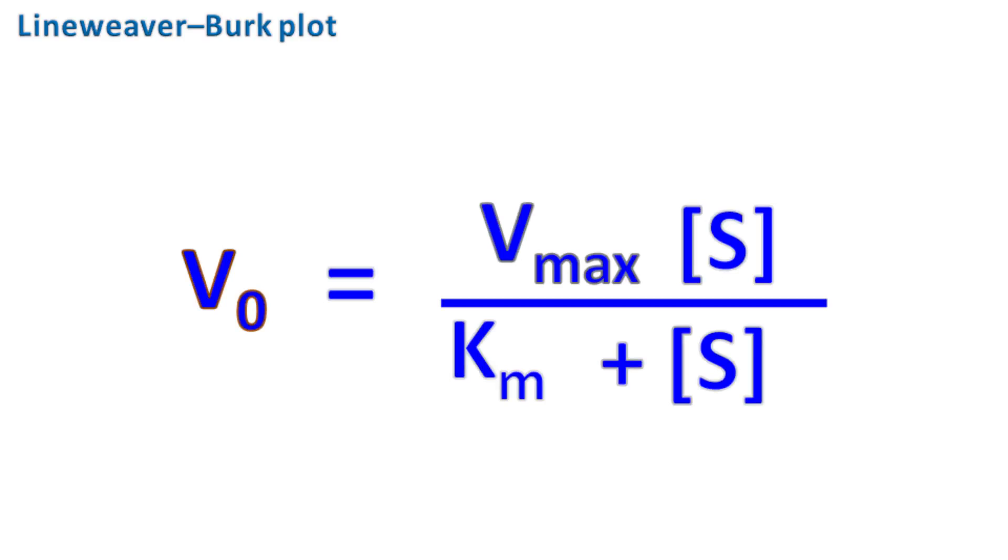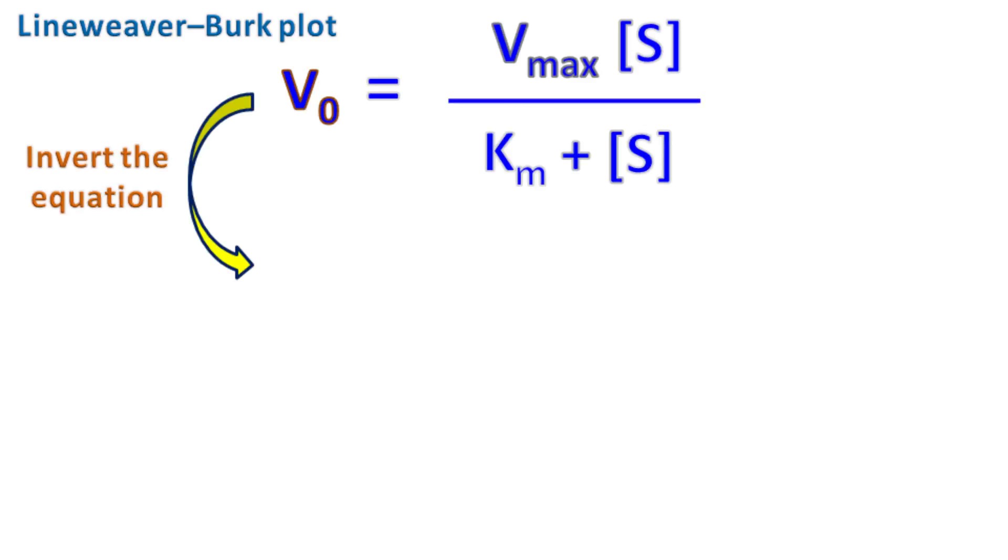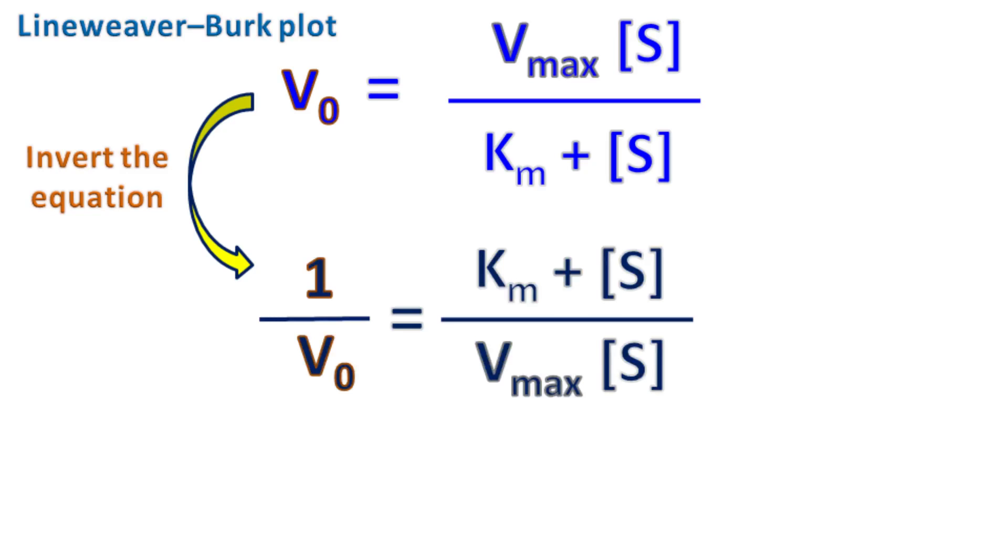According to Michaelis-Menten equation, V0 is equal to Vmax into S upon Km plus S. If we inverse this equation, we get 1 over V0 is equal to Km plus S upon Vmax into S.